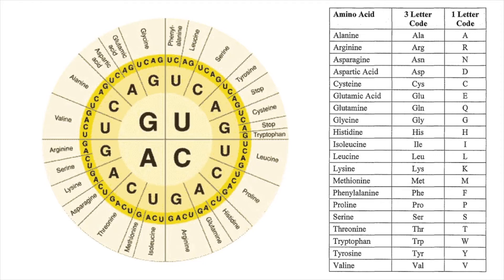When looking at the genetic code, there are a couple of ways it can be shown. One is in the standard table, and another is the circle genetic code, which is actually the easiest to use. You start at the middle — so for AUG, you find A in the middle circle, then look at U, then move outward from there. Every amino acid has a full name, a standard three-letter code, and a one-letter code as well.